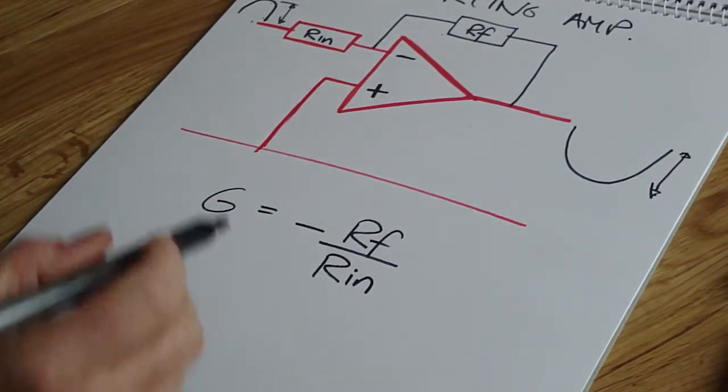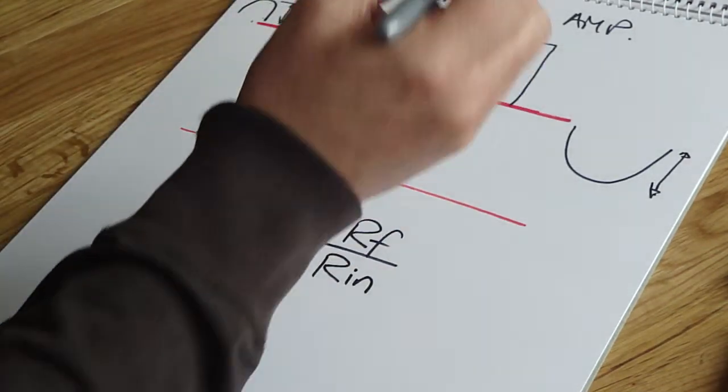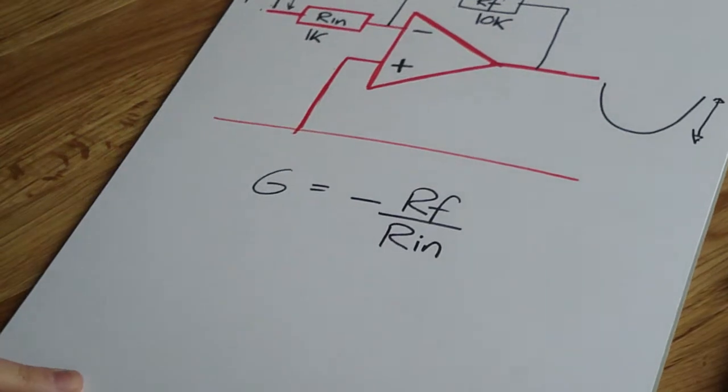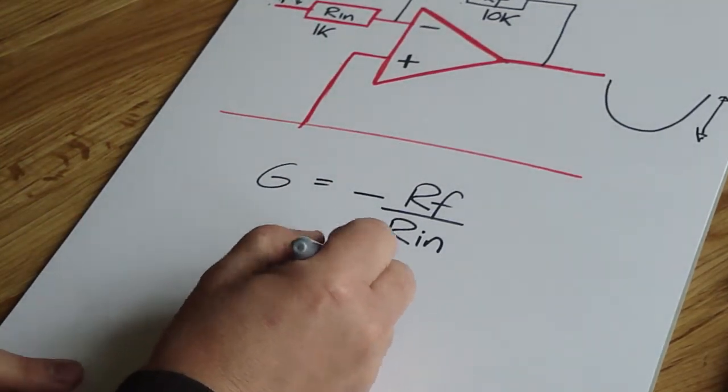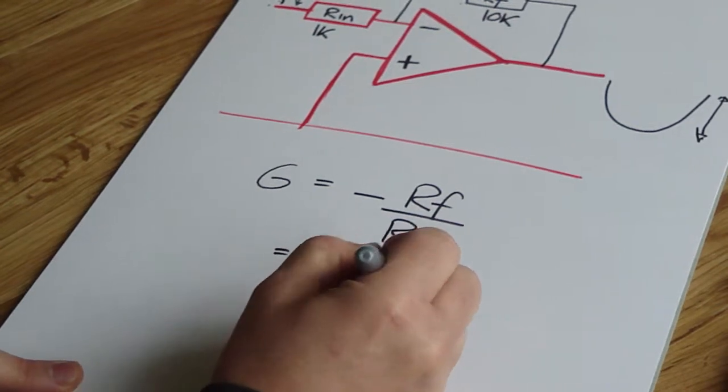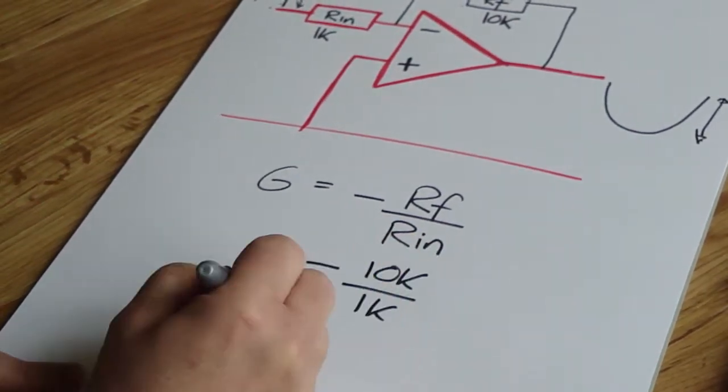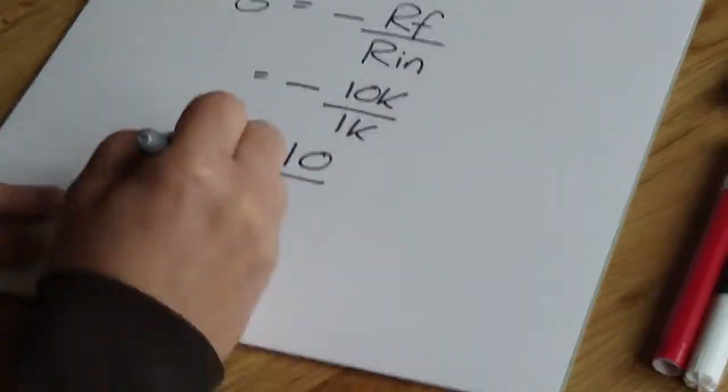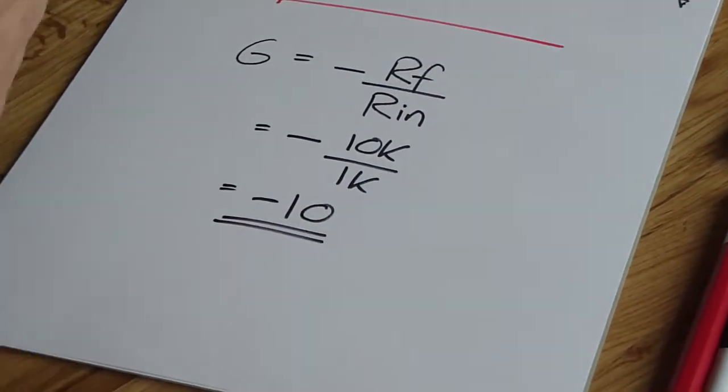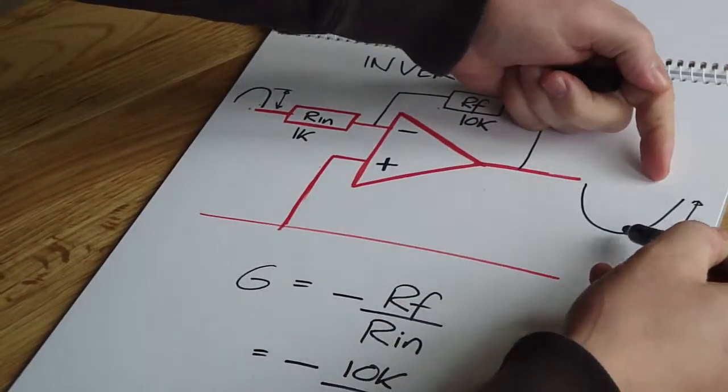Now that means that if this was 1k and this was 10k, then the formula would be minus, because it's the inverting amp, RF which is 10k divided by Rin 1k equals minus 10. There's no units on it because it's just an amplification factor. So if this was 1 volt, that would be 10 volts.